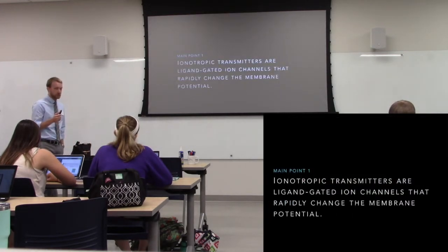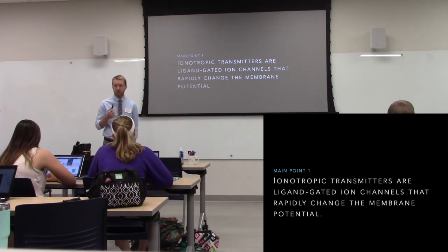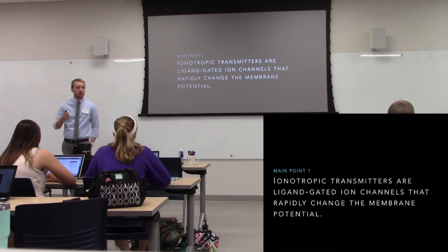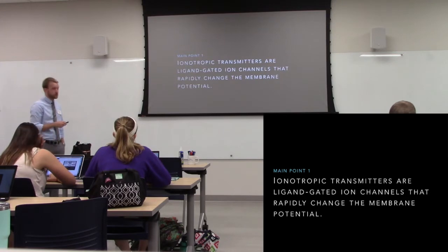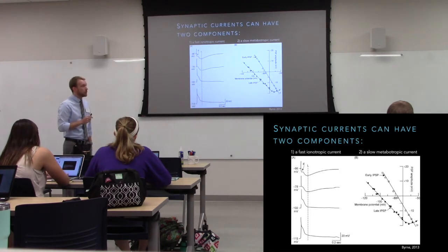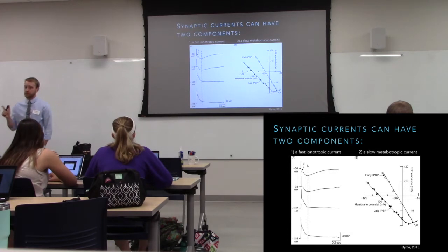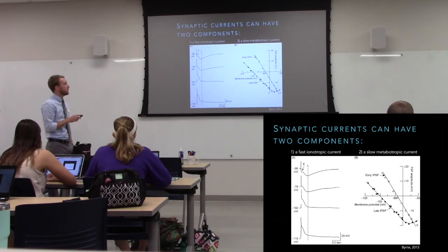We'll start with ionotropic receptors, which generate those fast synaptic currents to either excite or inhibit the postsynaptic cell. When you hear ionotropic receptor, think moving ions — they are ligand-gated ion channels, not leak channels, not voltage-gated. Whenever you look at synaptic currents, you can find two different components. The early component is mediated by ionotropic receptors.